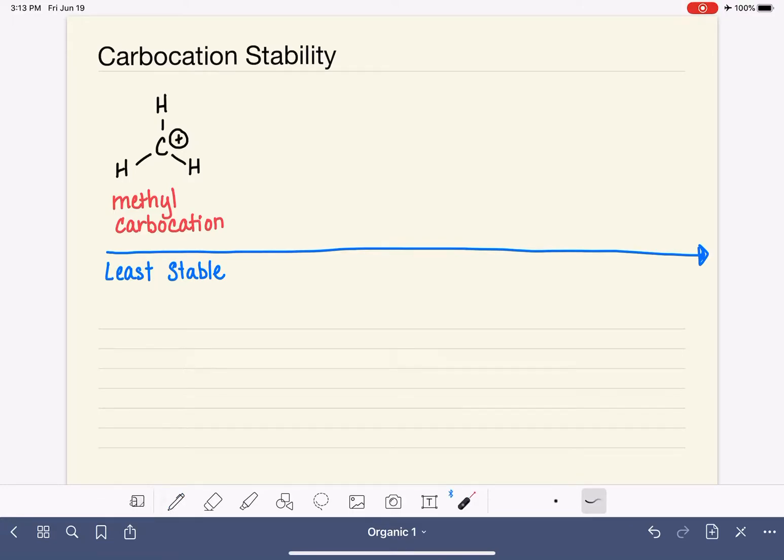The carbocations increase in stability as we replace hydrogen atoms with alkyl groups or carbon chains. For example, we could replace this hydrogen with, let's say a methyl group. The carbon in the middle is still positively charged. Having just one alkyl group attached to the positively charged carbon increases the stability of that carbocation, and it's additive, so as we add more alkyl groups or carbon chains to that center carbon, the carbocation gets even more stable.